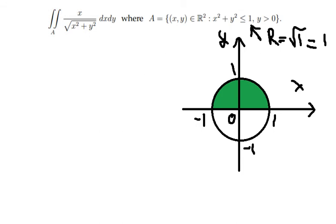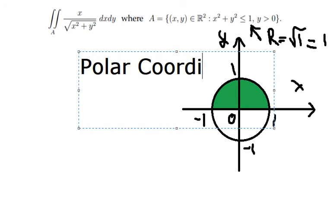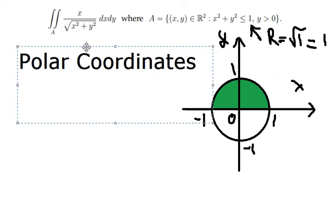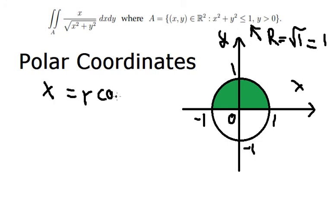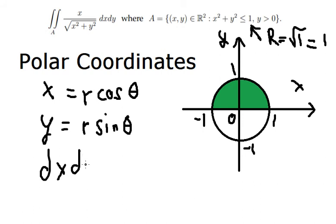Now we can use polar coordinates. So we put x equal to r cos θ, y equals r sin θ, and dydx equals r dr dθ.